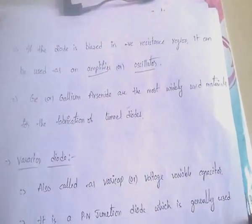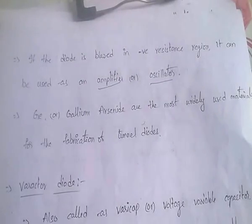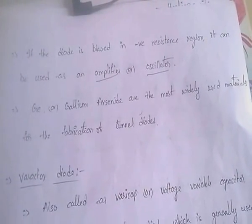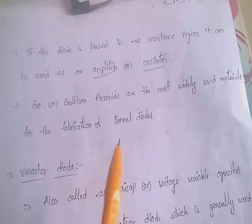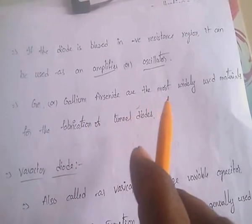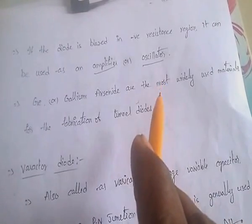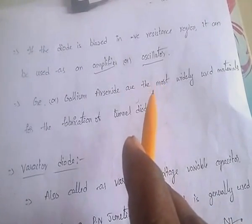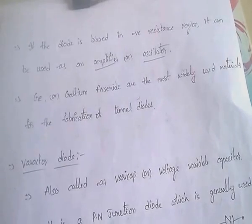If the tunnel diode is biased in the negative resistance region, it can be used as an amplifier or oscillator. Germanium or gallium arsenide are the most widely used materials for the tunnel diode.